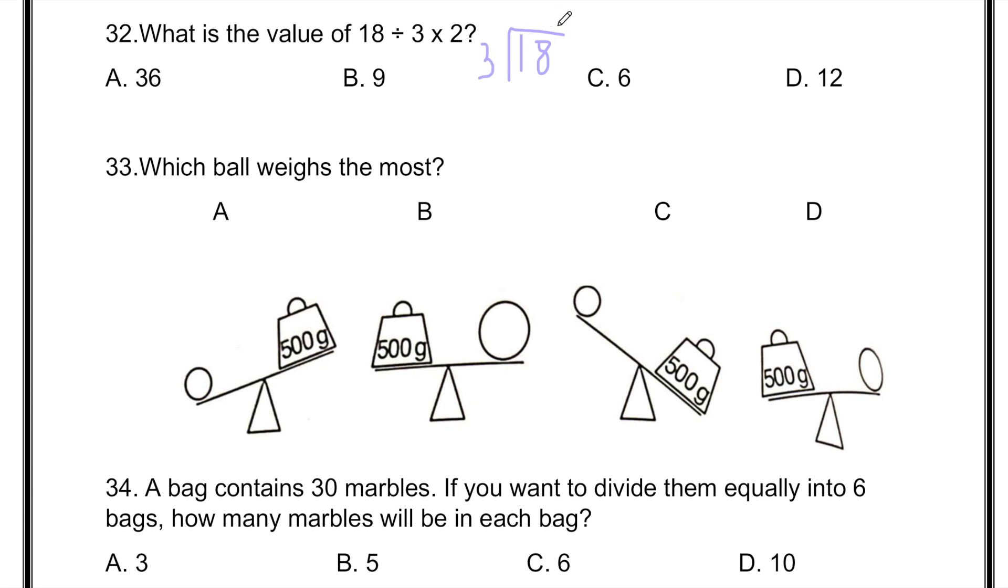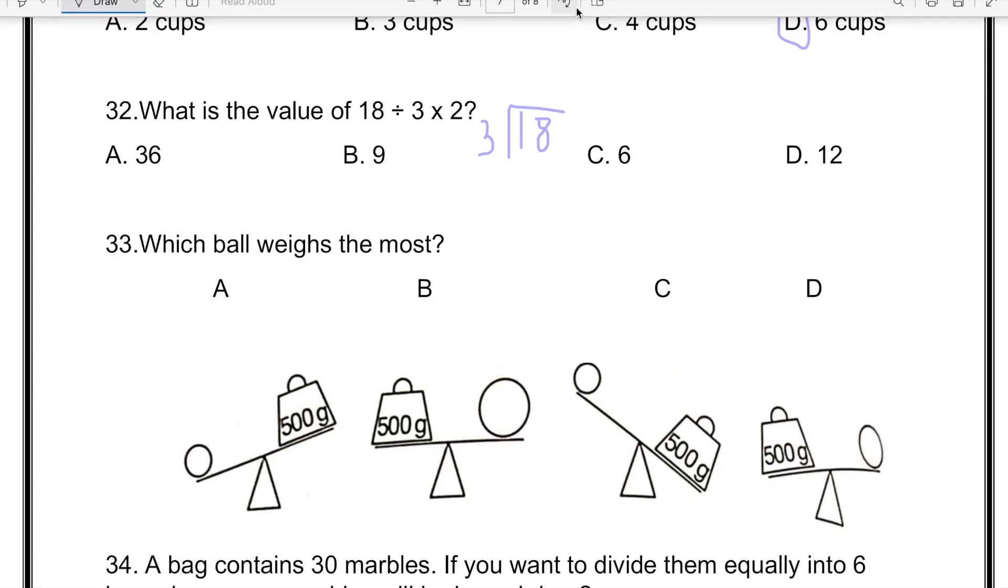3 sixes are 18. So 6 is the result. 6 times 2 is 12, meaning the answer is going to be D, 12.